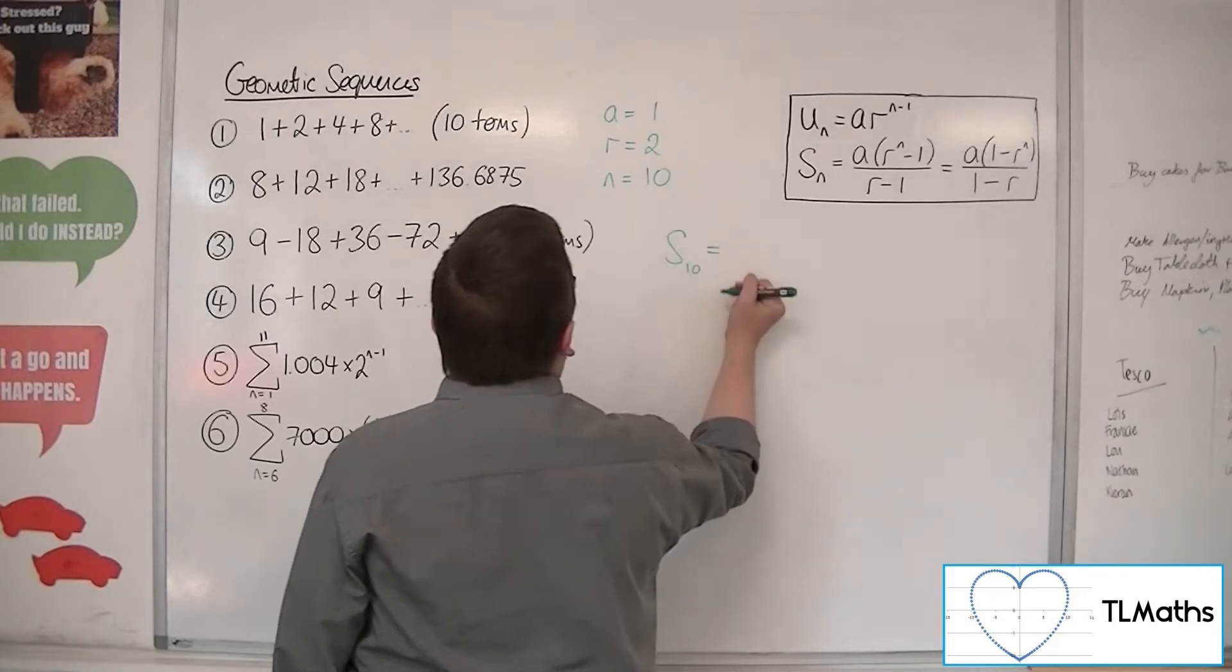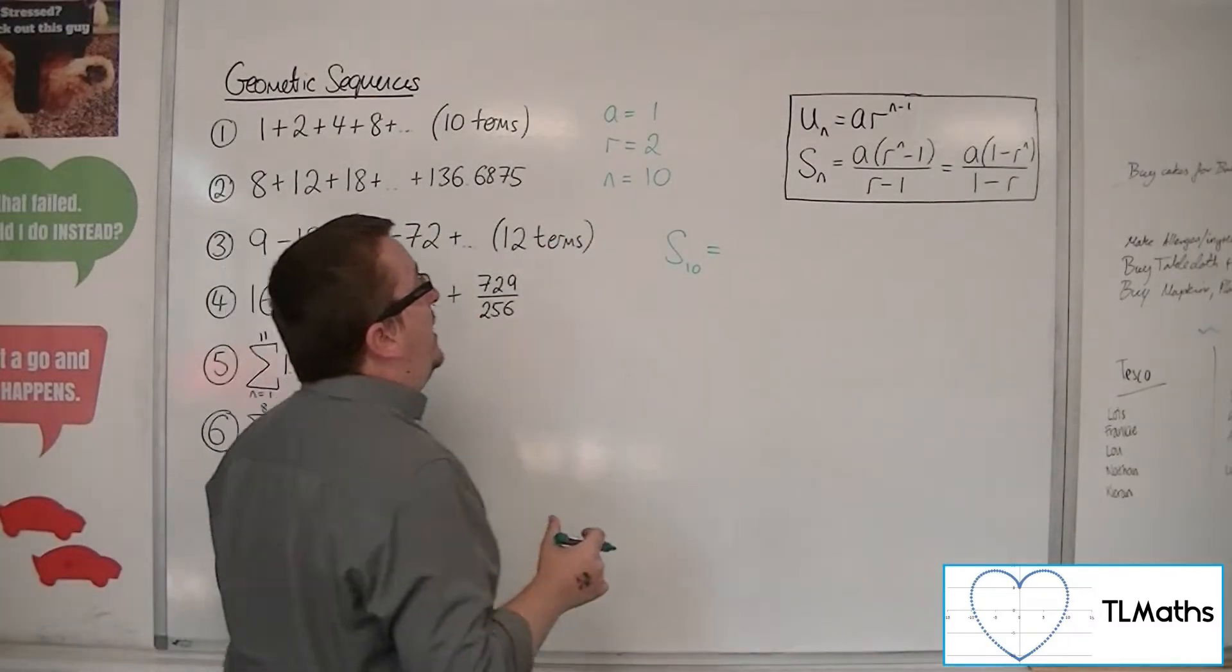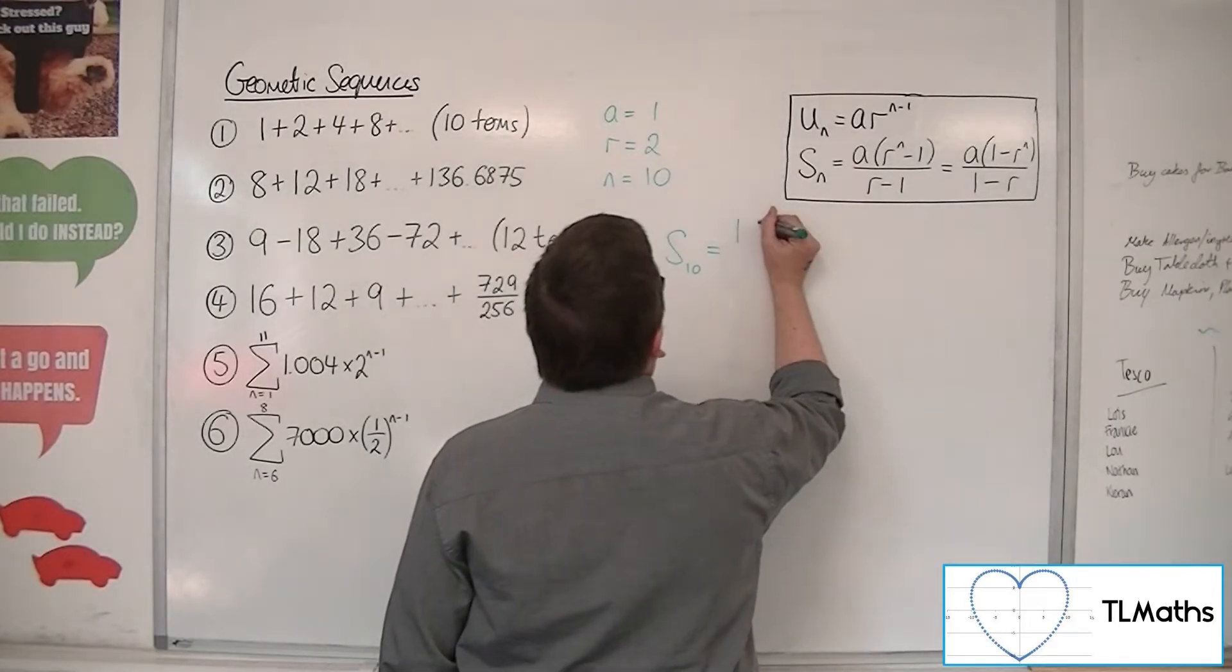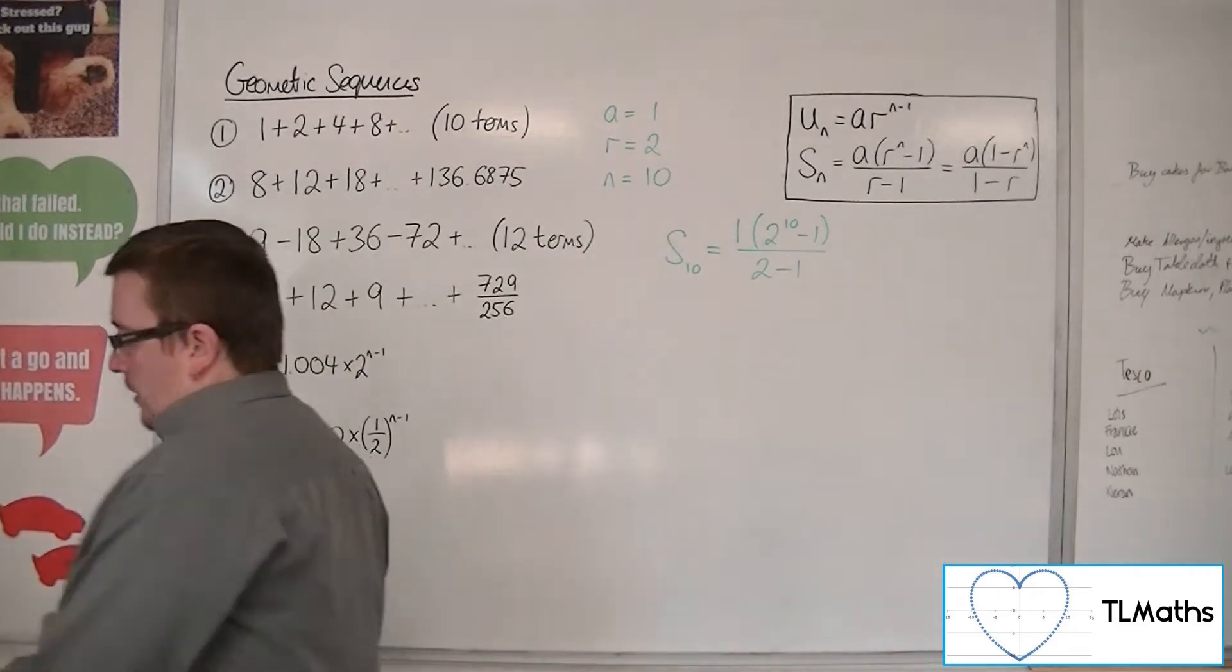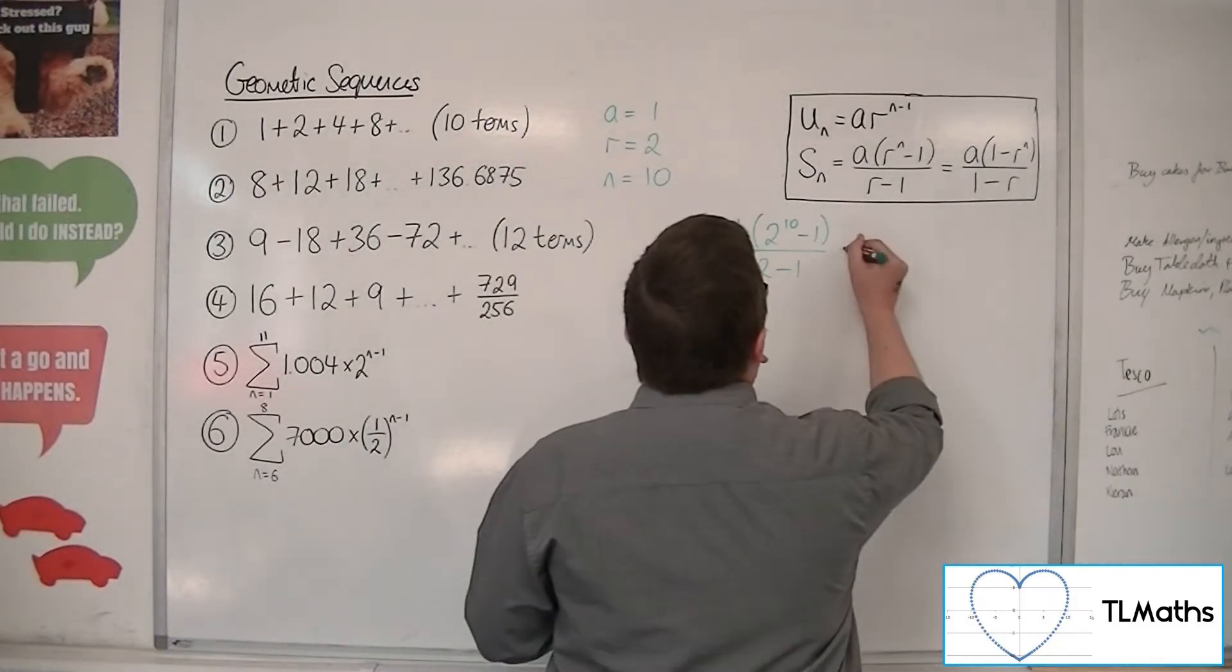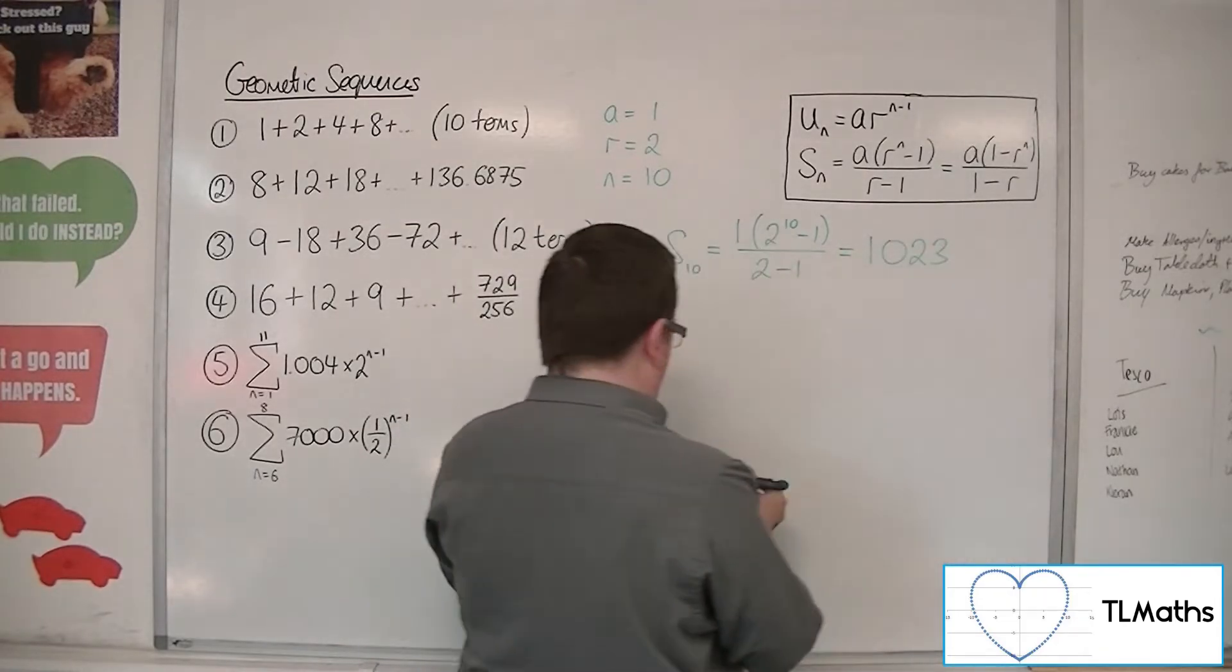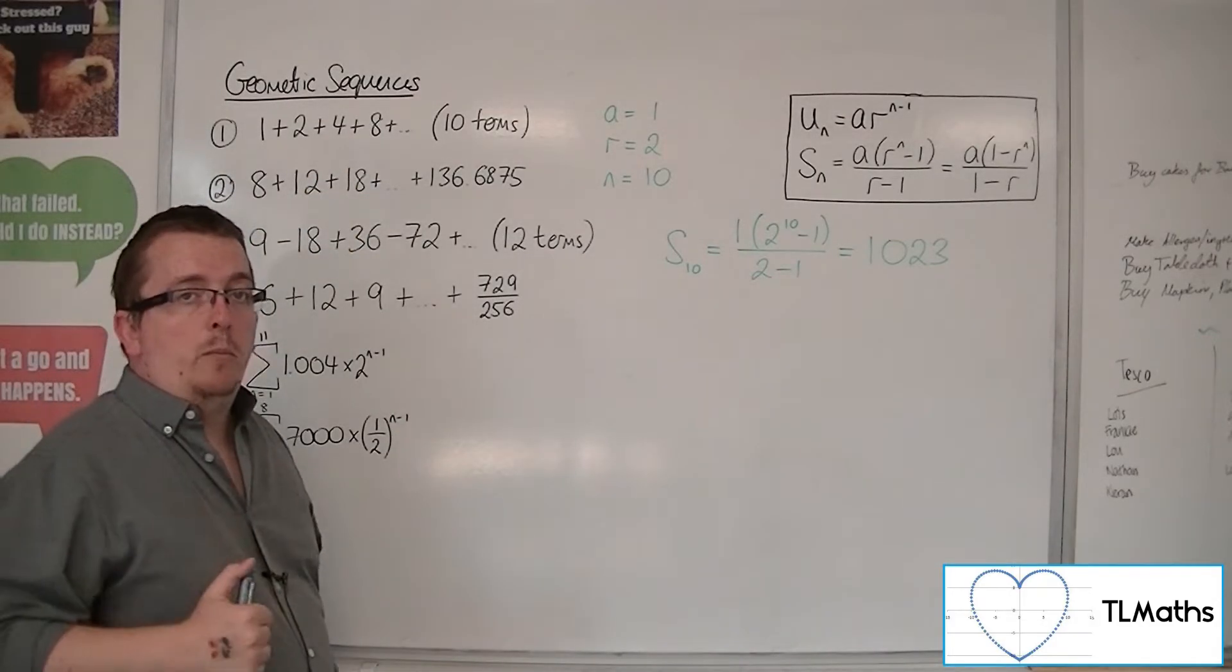So the sum to 10 terms, now you can use either of these formulas, it doesn't matter which, they both give you exactly the same answer. So I'm going to use this one, so a is 1, r is 2, so 2 to the 10 take away 1, all over 2 take away 1. In the numerator, we have 2 to the 10 take away 1, so 1,023, and in the denominator we've got 1, so this is just 1,023. So that is the sum of those 10 terms in number one.